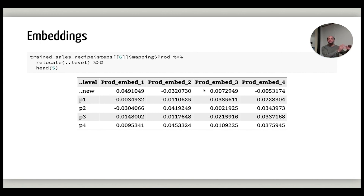And you can see here how each product is now represented by an embedding of 4 numbers, and these 4 numbers are going to replace the old product category within the data going forward. You can now use this for any downstream model — it doesn't even have to be a neural network. You could also use this if you wanted to just explore your data further and learn more about the products.